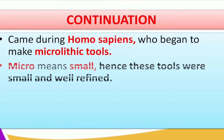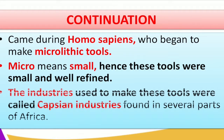The term microlith comes from micro, meaning small. Hence these tools were small and well-defined. The tools that were small and well-defined are known as microlith tools. The industries used to make these tools were called the Capsian industries, found in several parts of Africa, because the Homo sapiens was one of the most extensively found species.